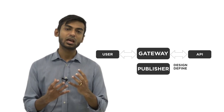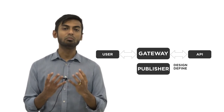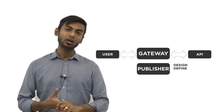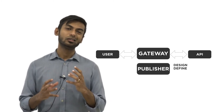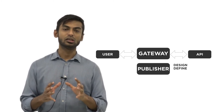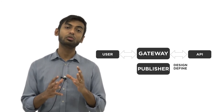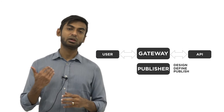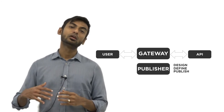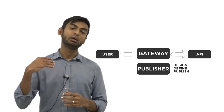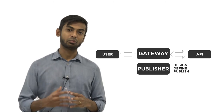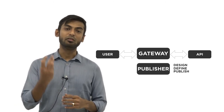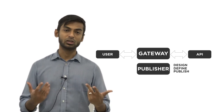This is where the actual API management component comes into play. Once you define how your API proxy looks and how it will behave, you can then publish it from the API Publisher to the API Gateway runtime, which will deploy your API proxy and make it available to be invoked by end users.